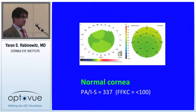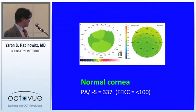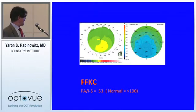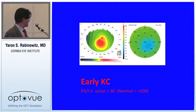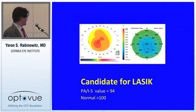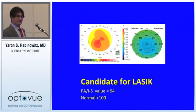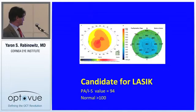A normal cornea shows normal pachymetry with a PIS value of 337 — well above 100. A form fruste keratoconus case with an ABSRAX pattern has OCT pachymetry of about 470, which could be within the lower normal range, but the PIS is 53 — grossly abnormal. An early keratoconus patient has a PIS value of 30 with pachymetry of 486. A LASIK candidate with asymmetric bowtie and thin cornea had a PIS of 94 — definitely abnormal — so using the combination of topography and OCT, there is no way I would operate on that patient.